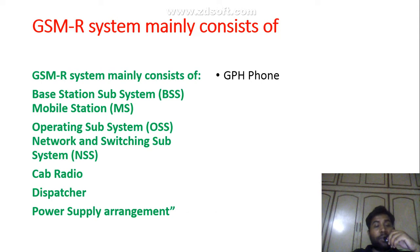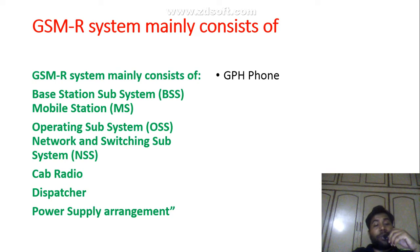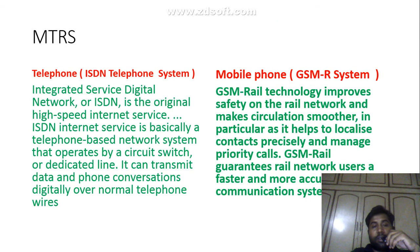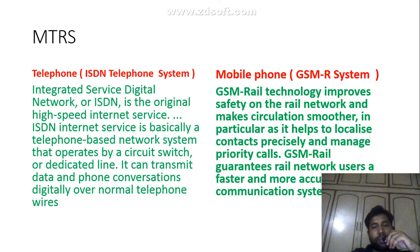The GSM-R system mainly consists of the Base Station Subsystem (BSS), Mobile Stations (MS), Operating Subsystem (OSS), Network and Switching Subsystem (NSS), cab radio, dispatcher, and power supply arrangement.